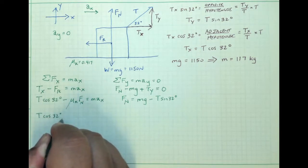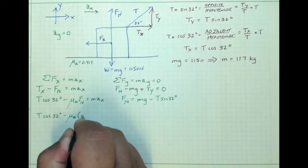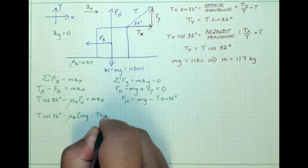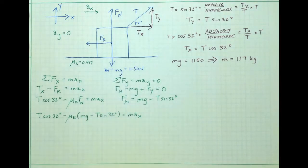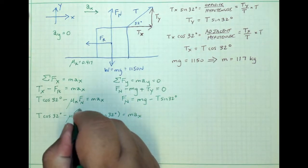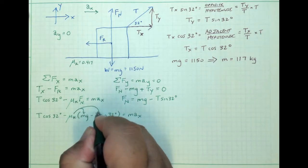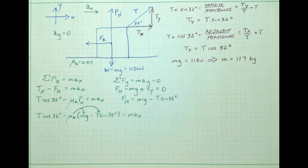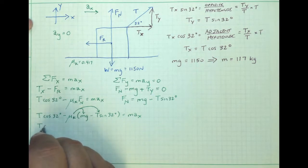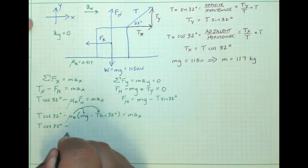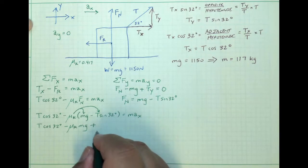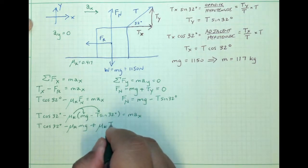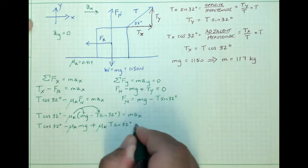This will make the equation very long, so it's very important to take this carefully. Don't try to do it too quickly or you might make a sign error or some other algebra error. After substituting and multiplying the coefficient of friction by both terms in parentheses, we get: T·cos(32°) − μ_k·mg + μ_k·T·sin(32°) = m·a_x. Be very careful about the double negative sign that produces the positive last term.